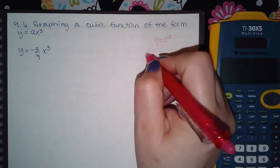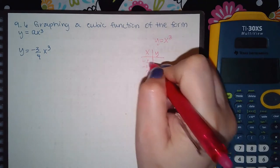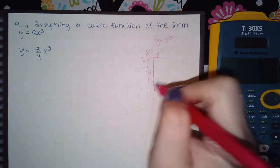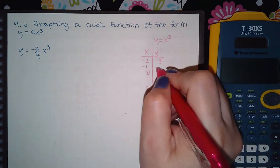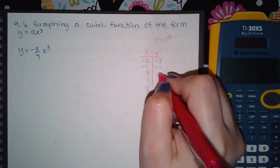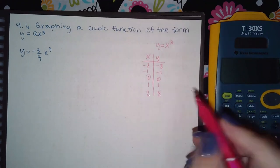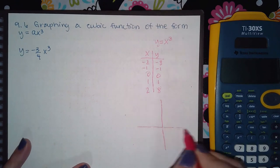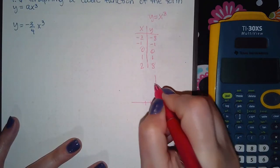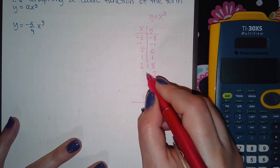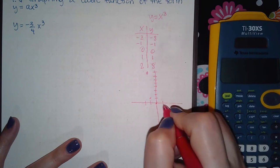So if I create a table: if I cube negative 2 I get negative 8, if I cube negative 1 I get negative 1, cube 0 we get 0, cube 1 we get 1, cube 2 we get 8. And so if I draw these points on here.